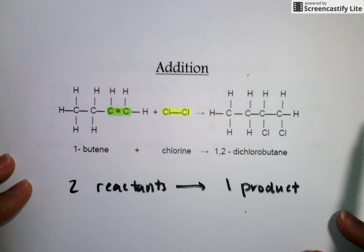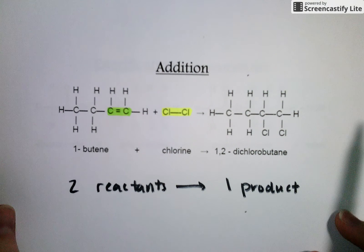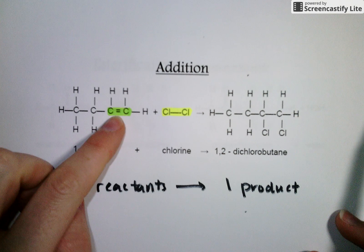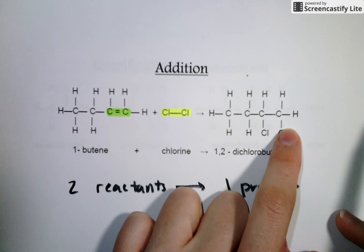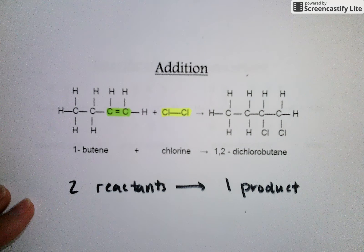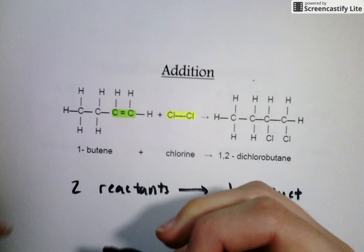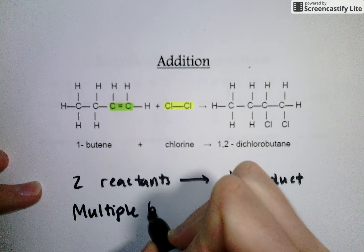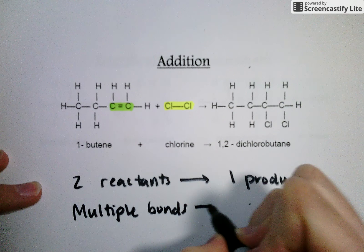But in order to do that, carbon and carbon can no longer have a multiple bond. It's got to break the multiple bond so that chlorine has a place to fit. So in this case, when we add something on, we're going from a scenario with multiple bonds to single bonds.